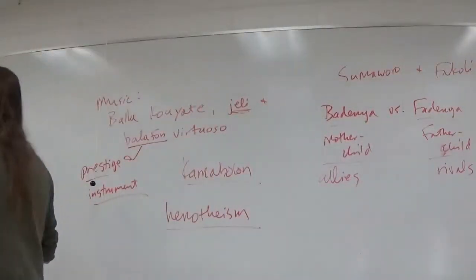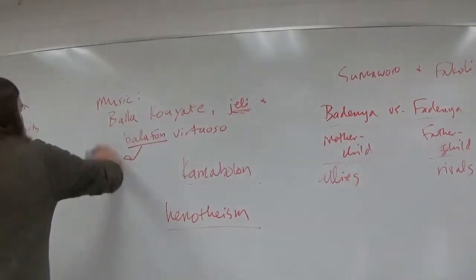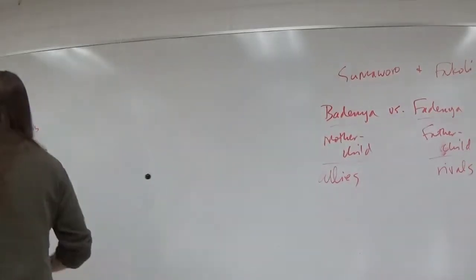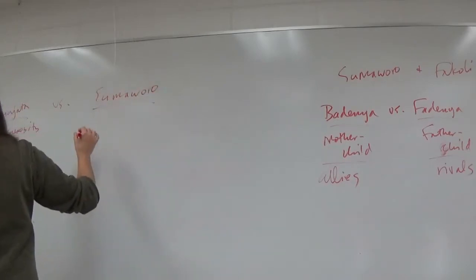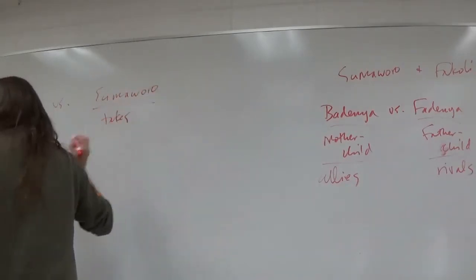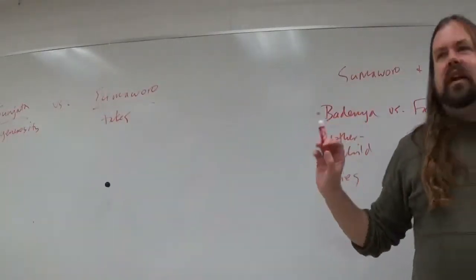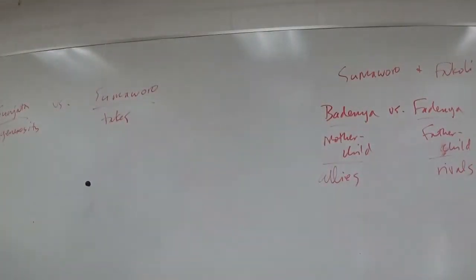So Sumo-waro is Fakoli's uncle? Mm-hmm. And this sort of fits a larger pattern of behavior with Sumo-waro as well. What did we note about Sunjata and about Sunjata's general behavior with others last time? Yeah, Sunjata is generous. Sunjata gives to his followers and to his enemies. What about Sumo-waro? Yeah, Sumo-waro doesn't give, he takes. He takes away Fakoli's wife. What else does he take? He takes land. Lives. Lots of lives. He kills an awful lot of people.